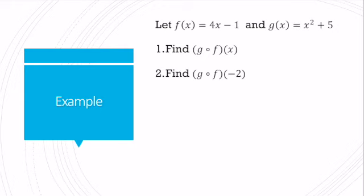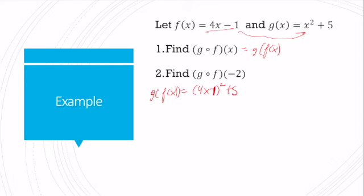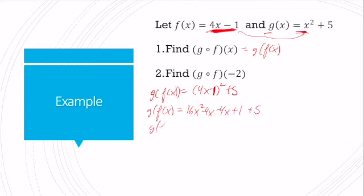Let's try function composition the other way. If I have g of f of x, that means I'm plugging f of x into x for g. So g of f of x equals the quantity 4x minus 1 squared plus 5 — I substituted f of x in for x in g. I need to FOIL that out, which gives me 16x squared minus 4x minus 4x plus 1 plus 5. So g of f of x equals 16x squared minus 8x plus 6.